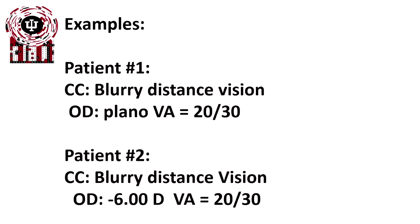So let's look at some examples. Patient number one has a chief complaint of blurry distance vision. Their right eye's prescription is Plano and their VA through that prescription is 20/30. Patient number two has a chief complaint of blurry distance vision. They're a six diopter myope in that right eye, but their VA is also 20/30. Well, the VAs are the same, but their prescriptions are different. What does this tell us the change in acuity or the change in refractive error should be?